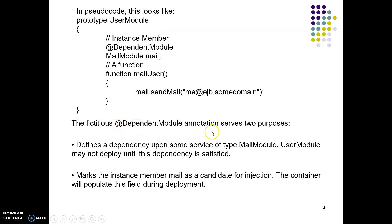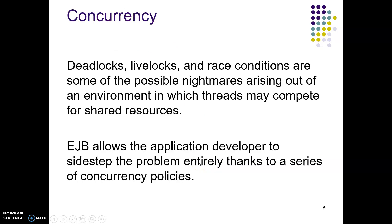The dependent module annotation has two purposes. First, it defines a dependency upon some service of type mail module — mail module is the class and mail is the object of that class. Second, the user module may not apply until this dependency is satisfied. The annotation also marks the instance member mail as a candidate for injection, and the container will populate this field during deployment, so the compiler understands that the mail object is a dependent variable.